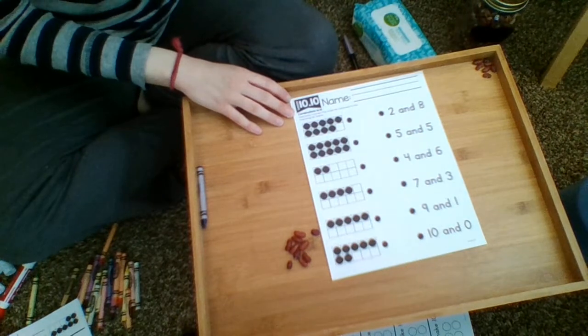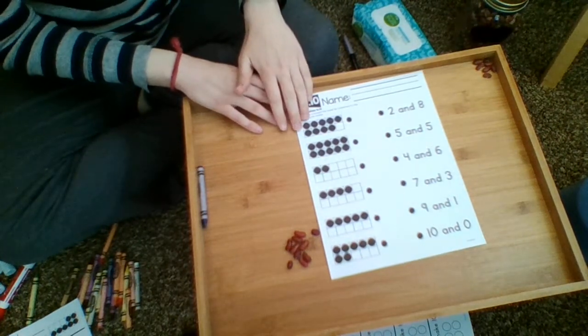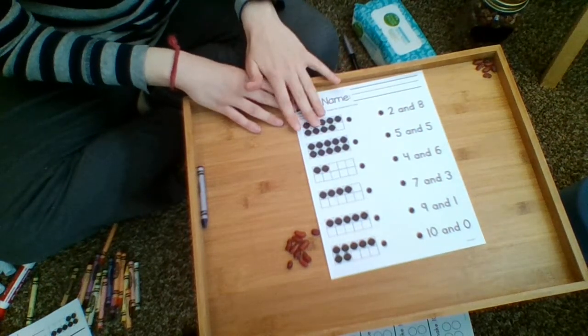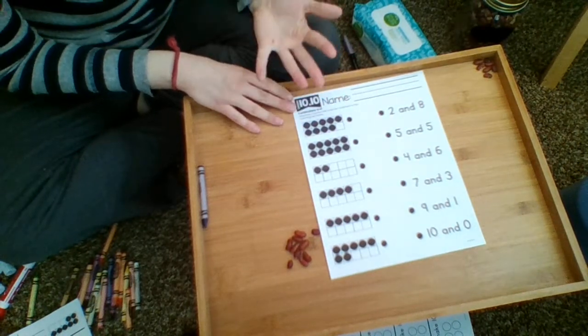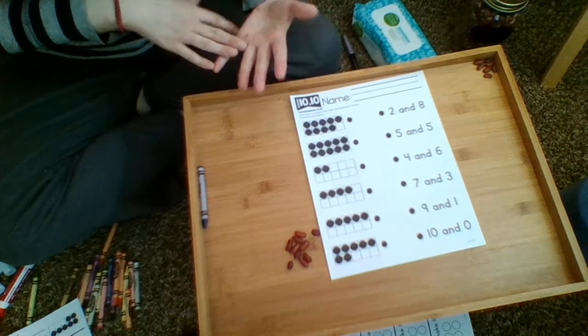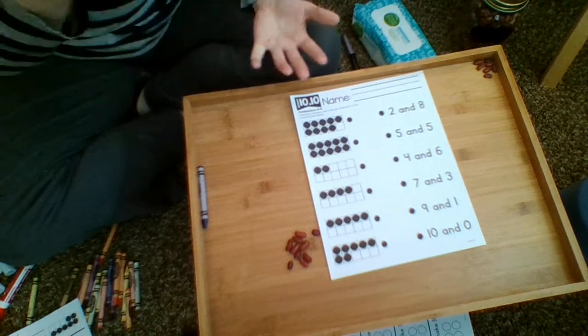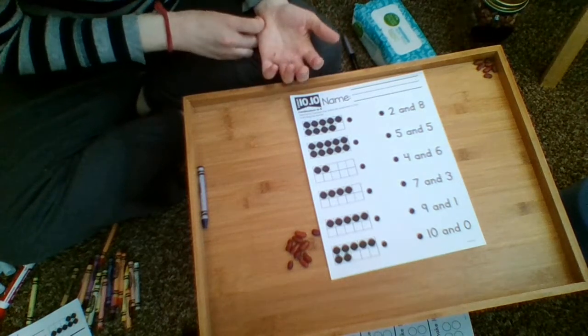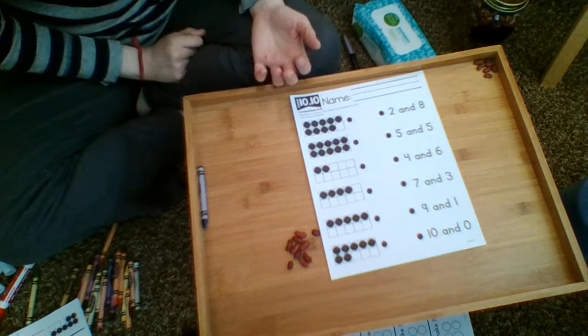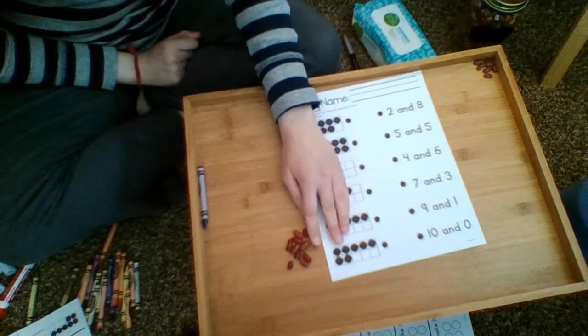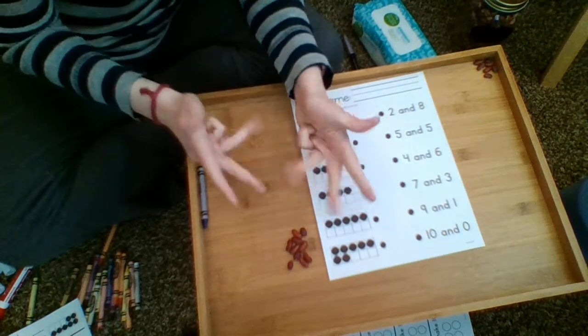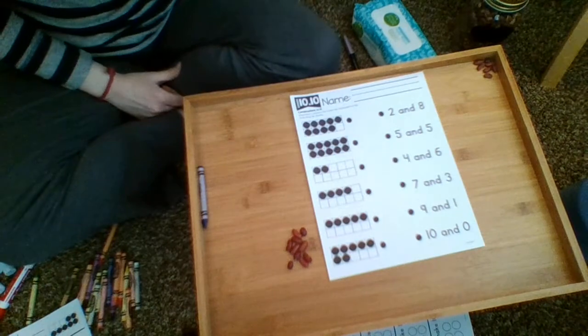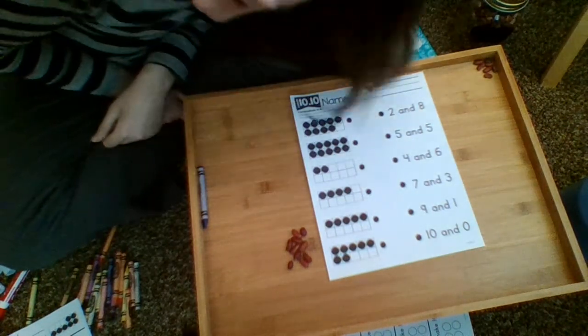What we're looking for by the end of kindergarten is to be fluent in combinations of 10, which means the kid doesn't really need to think about it. Five and five make 10, two and eight make 10. It doesn't have to be super fast, but without having to count on your fingers by the end of kindergarten. It'll be reviewed in first grade, and especially with these times, we're flexible.